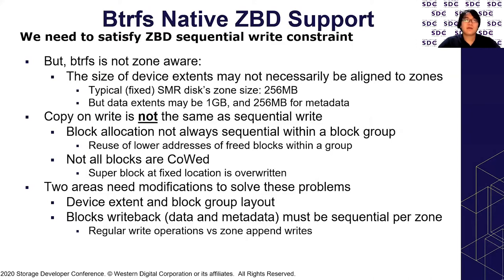BtrFS is not currently zone-aware. For example, a device extent may not align to zones. BtrFS allocates and uses a fixed-sized region from devices as a device extent. Typical SMR disk zone size is 256 megabytes, but BtrFS device extent is 1 gigabyte for data and 256 megabytes for metadata. So the metadata device extent is fine with this setup, but data device extent can span multiple zones, which makes zone management really complicated.